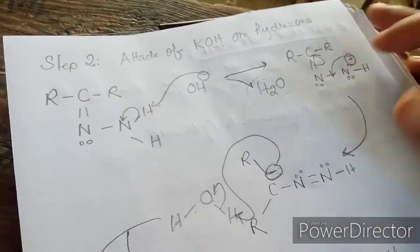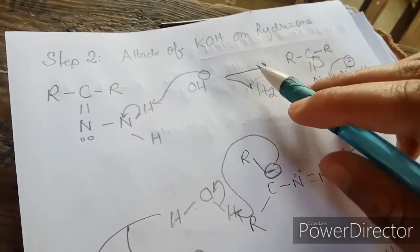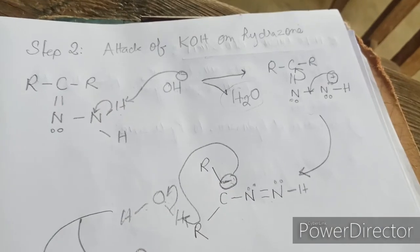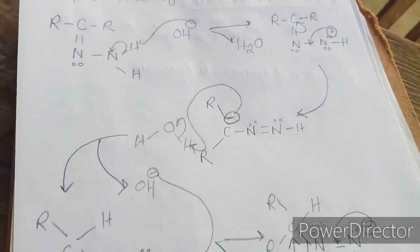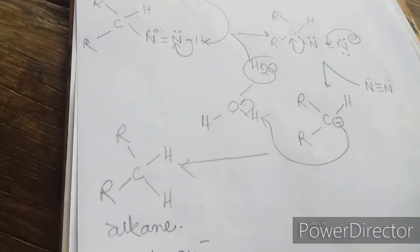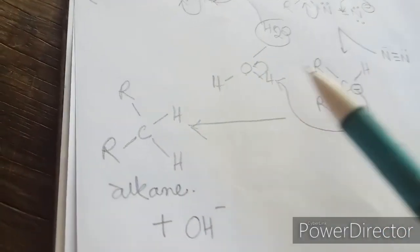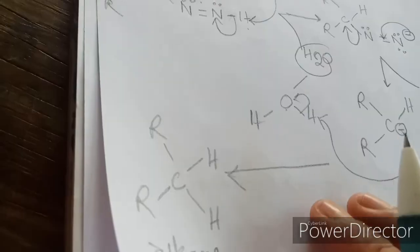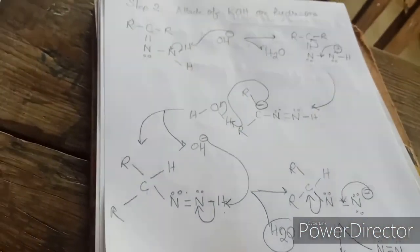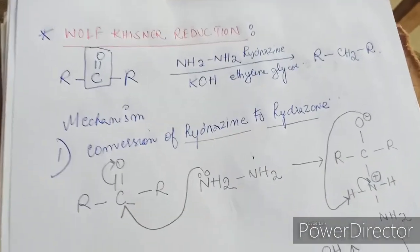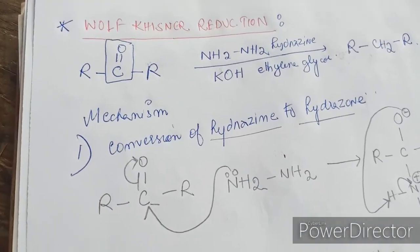So this is step two. Step two is the attack of the base on the hydrazone, which goes through these steps and finally gives the final product, the alkane. I hope the video is useful to you. Thanks for watching.